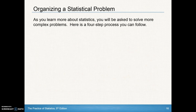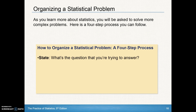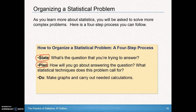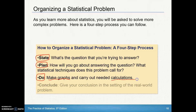As you learn more about statistics, you'll have to solve more complex problems. For right now, we've got a four-step process you can follow — a general problem-solving procedure for math or life. First, state the problem: ask yourself what question you're trying to answer. Then plan: how are you going to answer that question, and what techniques and tools does the problem call for? Then do it — make graphs and do the calculations necessary. Finally, check your answer and make a conclusion: tell them what you've discovered and what conclusion you've come up with.